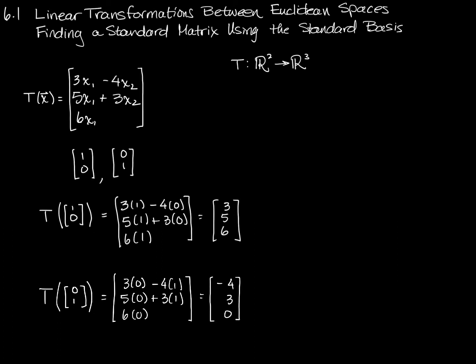And those two vectors together, I'm going to call these w1 and w2, having come from e1, e being the standard basis vector, and e2. If I put those together in the same order into a matrix, 3, 5, 6, negative 4, 3, 0,